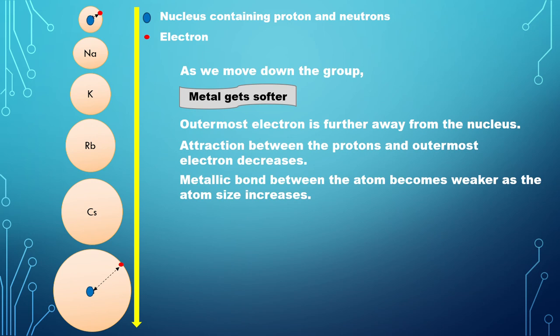Therefore, the metallic bond between the atoms becomes weaker as the atom size increases, leading to a lower melting point and boiling point of the elements as we move down the group.